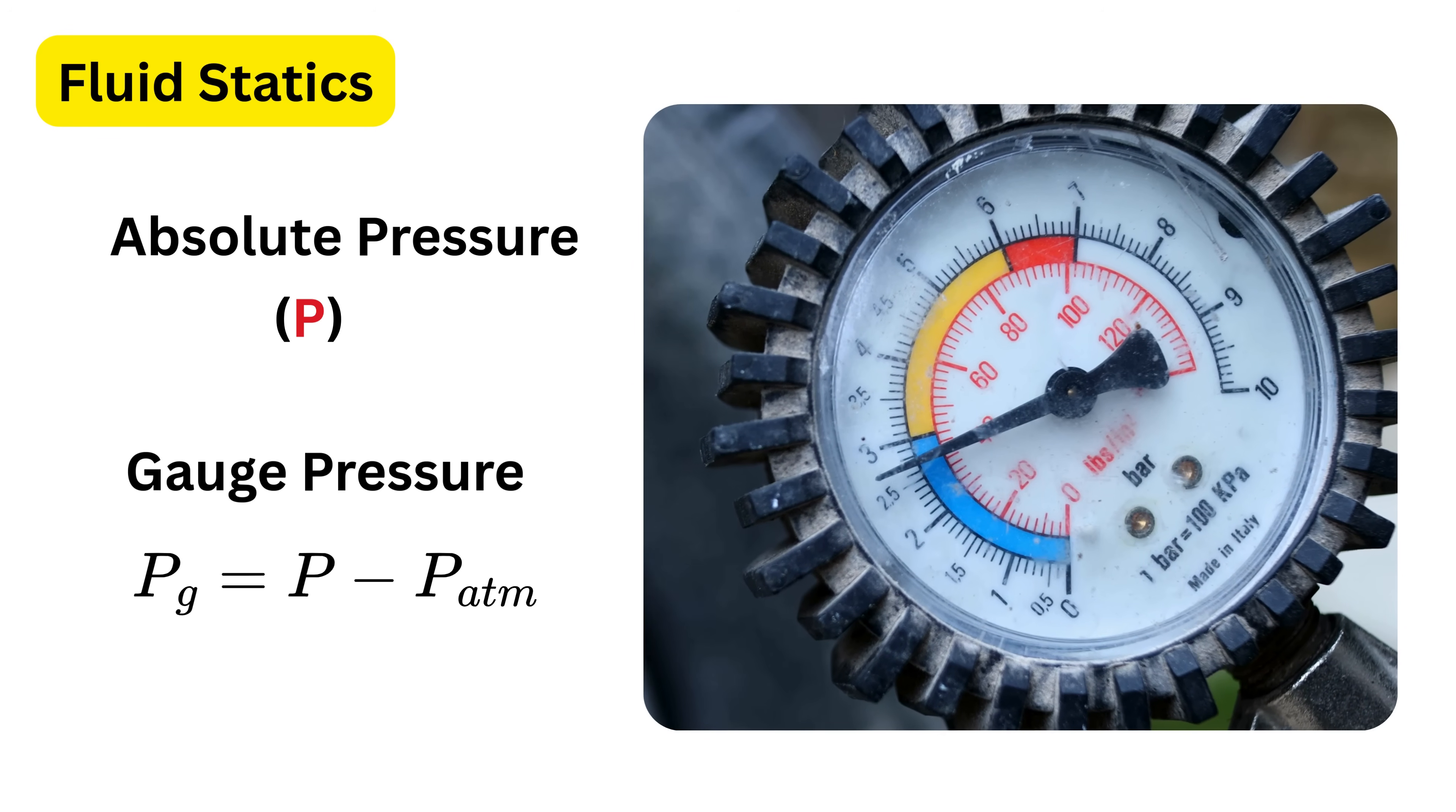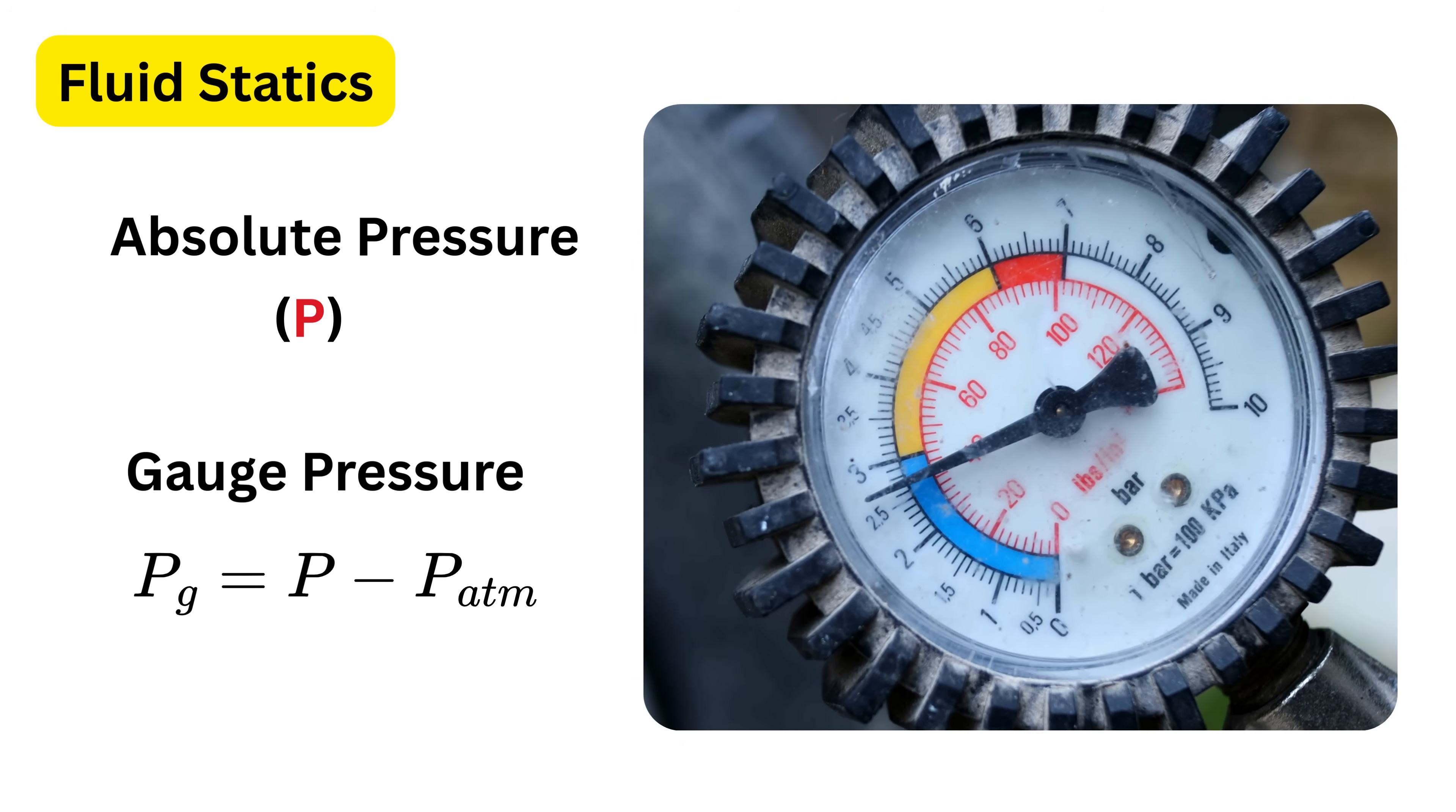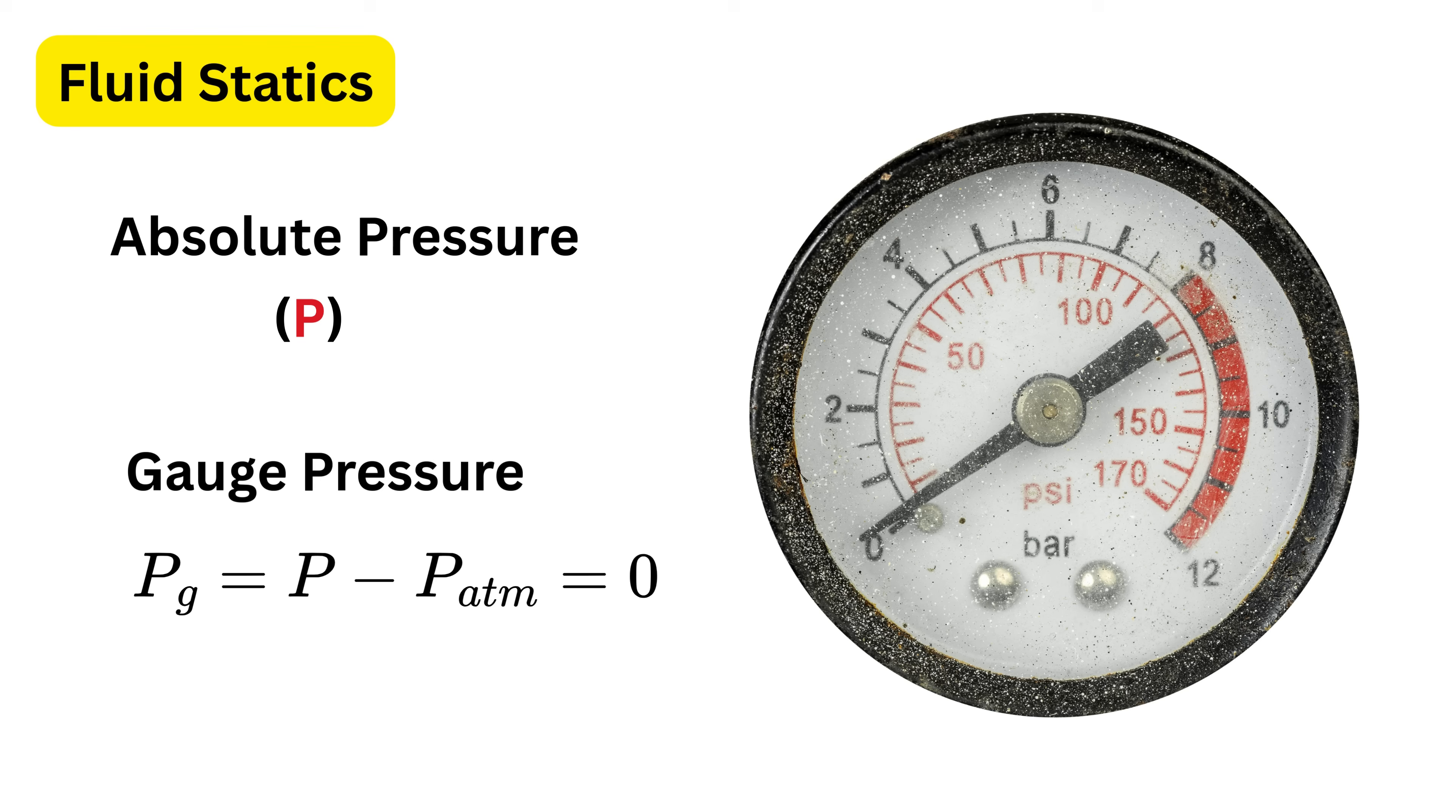Most instruments we use in daily life show gauge pressure, not absolute pressure. If gauge pressure is zero, it does not mean there is no pressure, it means the pressure is equal to atmospheric pressure.